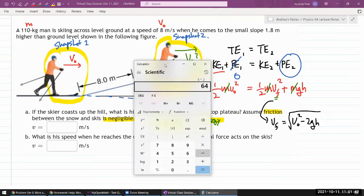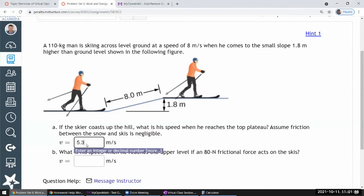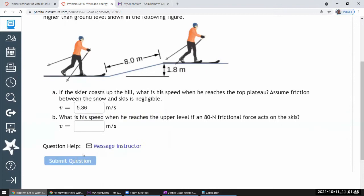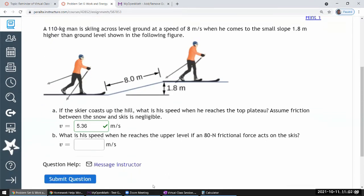And then load part B. So 8 squared minus 2 times g, 9.8 times h, 1.8. I need to take square root of that. 5.36. Well, I probably should randomize this question in the future, not today.